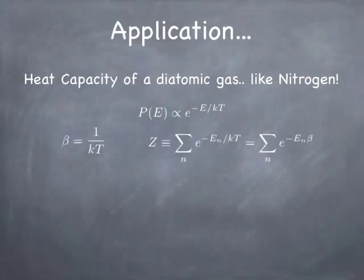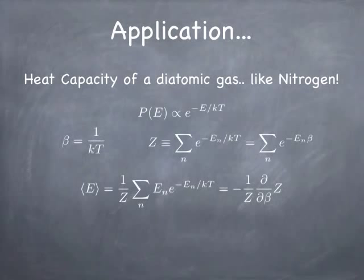In the case of the Simple Harmonic Oscillator in one dimension, there is one state for each value of n, where n goes from 0 to infinity. The expectation value of the energy is simply the energy of each state times the corresponding probability of that state being occupied, added up for all the states. The 1 over Z out in front really just corresponds to a normalization factor.